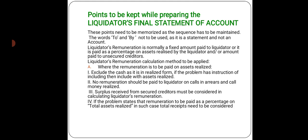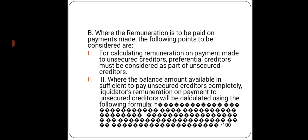The liquidator can be an individual person or a group of persons. When the company has to make the payment or remuneration for this task, the calculation of remuneration will be done by considering these points. Where the remuneration is paid on the payment made, for calculating remuneration on payment made to unsecured creditors, preferential creditors must be considered as part of the unsecured creditors.